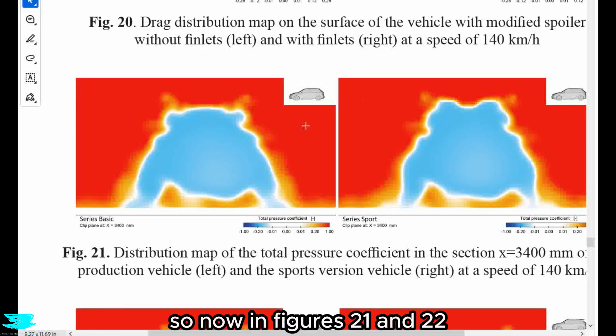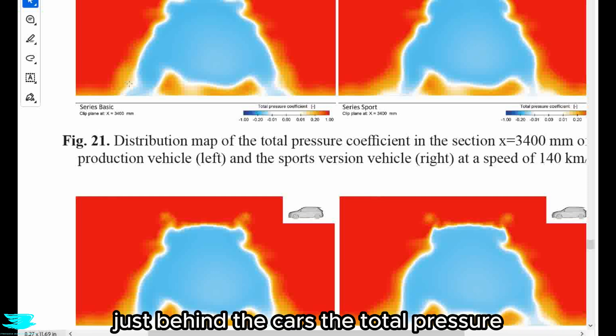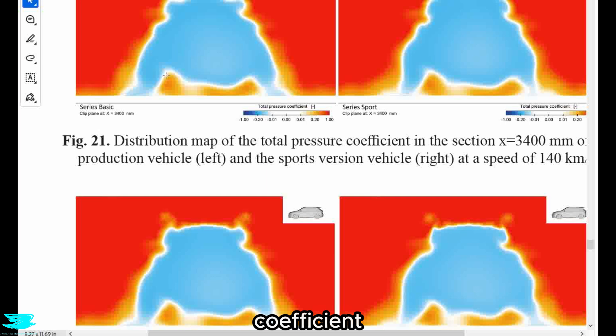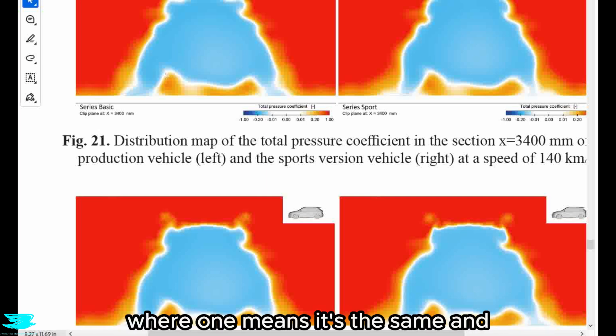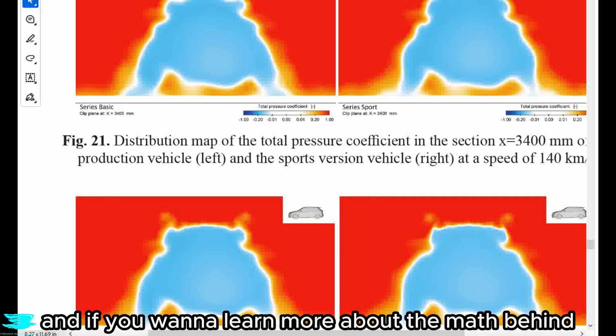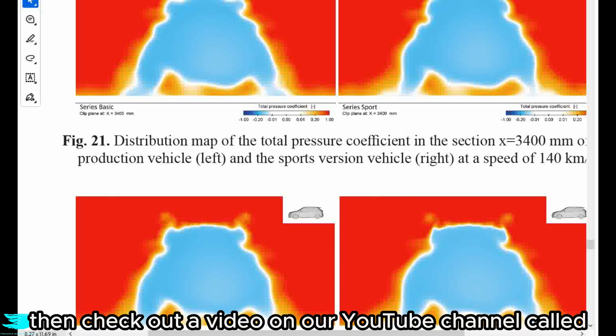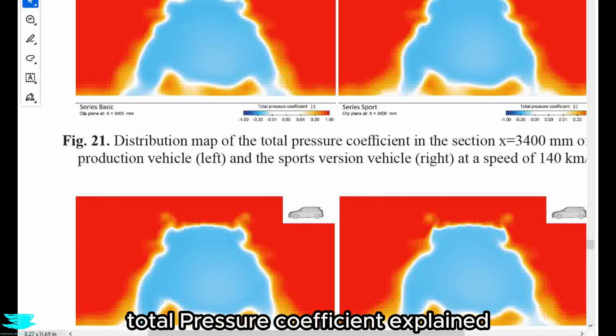So now in figures 21 and 22, we see the total pressure coefficient maps in a cut plane just behind the cars. The total pressure coefficient is essentially how much energy the flow still has, where one means it's the same and lower values is worse. And if you want to learn more about the math behind the total pressure coefficient, then check out a video on our YouTube channel called Aero Fundamentals number 33, total pressure coefficient explained.